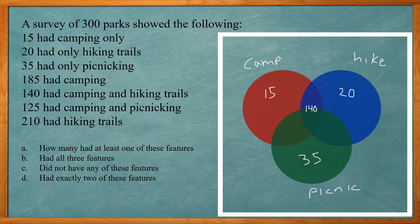If I go back to 185 camping so I have 140 and 15 so far. So if I take 185 minus 140 minus 15 it leaves me with 30 so that has to be 30 here. So that camping has a total of 185.